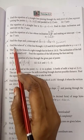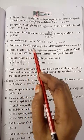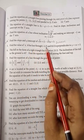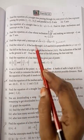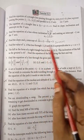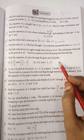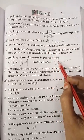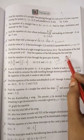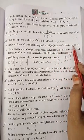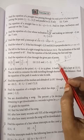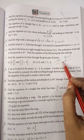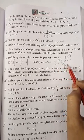Sum number 5: find the value of a if the line through minus 2 comma 3 and 8 comma 5, so one line is there, that line passes through these two points. And also perpendicular to y equal to ax plus 2.